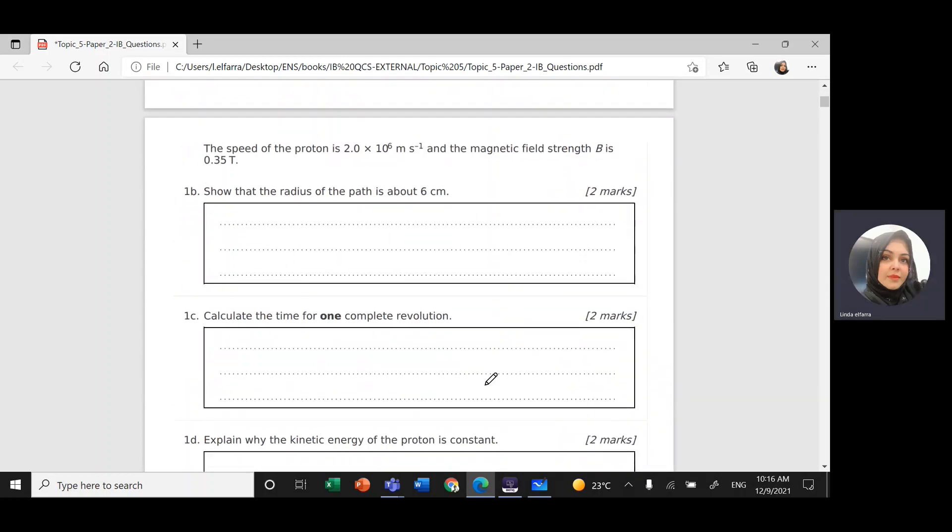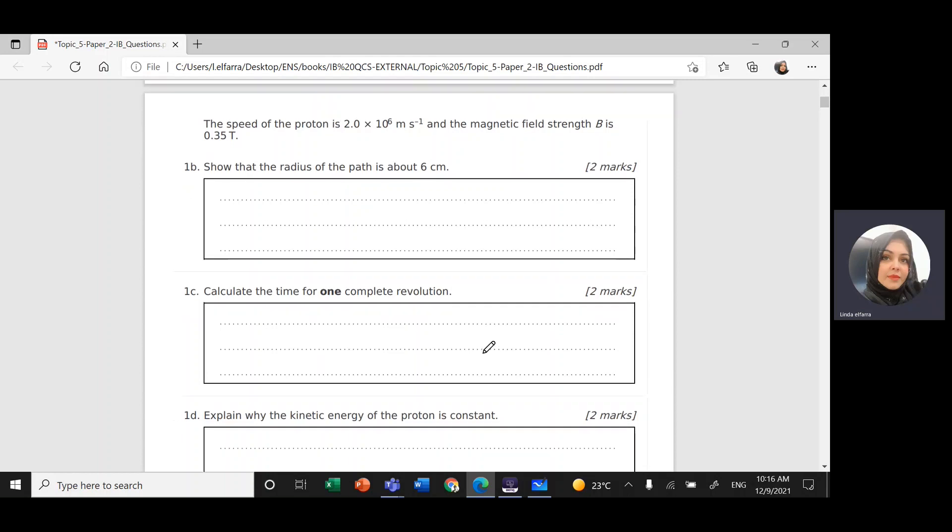Now, second question, the second part of the same question. The speed of the proton is 2 times 10 to the power 6 meter per second. This is the speed of the proton and the magnetic field strength B is 0.35 tesla. Show that the radius of the path of this proton is about 6 centimeters. So I need to prove R equals 6 centimeters.